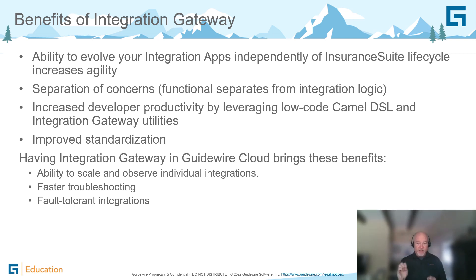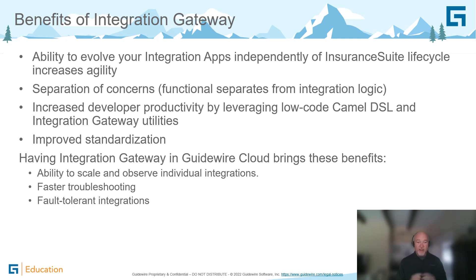I can now evolve my integration app separately from my InsuranceSuite applications. Each one has a separation of concerns between the functionality of my InsuranceSuite application and integration code in Integration Gateway. It also improves the productivity of integration developers because they don't have to worry about low-level code to connect to many different objects. Because Integration Gateway is built on Apache Camel, Apache Camel provides a lot of the infrastructure. It also improves standardization between how integration apps and InsuranceSuite applications are built.